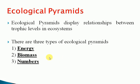The next topic is Ecological Pyramids. Ecological Pyramids display the relationship between trophic levels in ecosystems — one energy level and another energy level. There are three types of ecological pyramids: Energy Pyramids, Biomass Pyramids, and Numbers Pyramids.